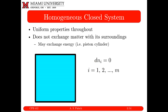Homogeneous closed systems. Back in Chapter 5, we worked out a whole set of thermodynamic expressions for homogeneous closed systems, and in this chapter we're ultimately going to expand them to homogeneous open systems. By homogeneous, the properties are uniform throughout. It's closed in that mass or moles can't cross my phase boundary — I can exchange heat or work with surroundings, but mass can't cross. Mathematically, the number of moles are constant; the differential of the number of moles is zero.